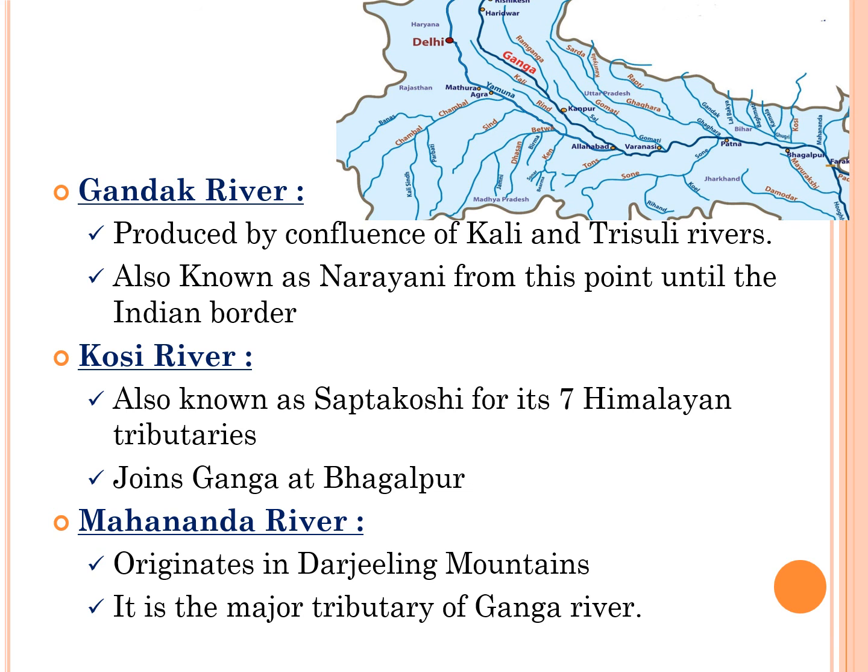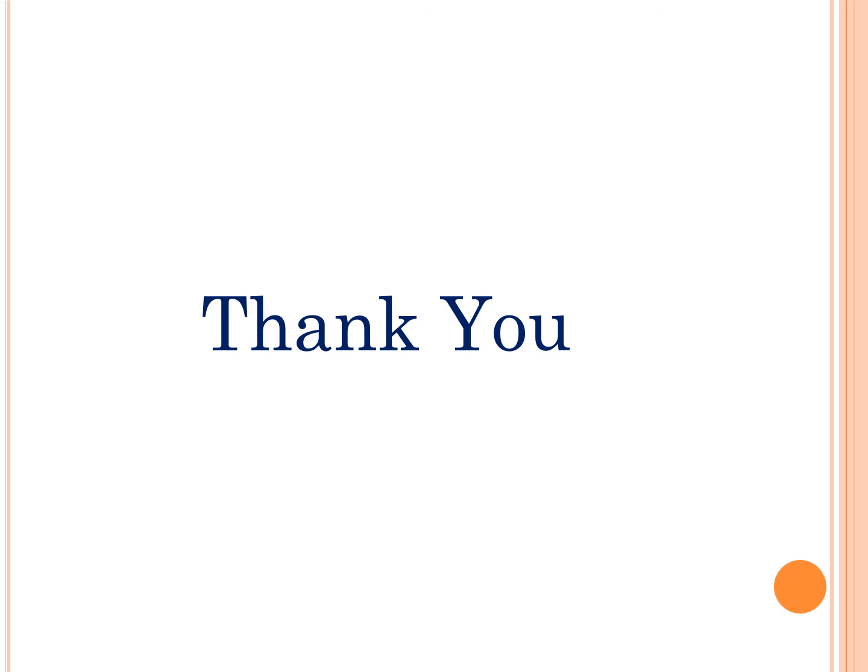The next important left tributary of Ganga river is Mahananda river, which originated in the Darjeeling mountains and is a major tributary of the Ganga. This concludes the discussion on the Ganga river system and its tributaries.